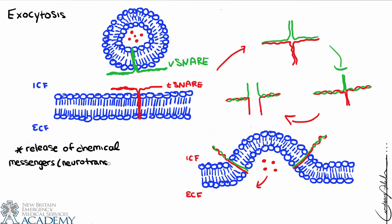That concludes our description of vesicular transport in terms of stuff moving into and out of the cell, in the context of membrane transport. One other concept to mention is vesicular trafficking — the idea that something inside a vesicle can be transported around inside the cell, not necessarily into or out of the cell, but just from one area of the cell to another. We won't cover that here since this is about membrane transport, but it's important — we'll see examples of vesicular trafficking especially when we consider how neurons work.